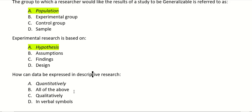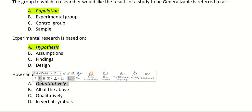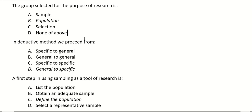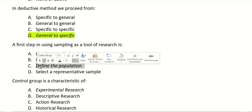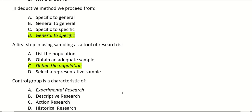How can data be expressed in descriptive research? Qualitatively, quantitatively, in verbal symbols, or all of the above? The right answer is quantitatively. The group selected for the purpose of research is: sample, population, selection? Right answer: population. In deductive method, we proceed from general to specific. The first step in sampling is to define the population. Control group is a characteristic of experimental research.